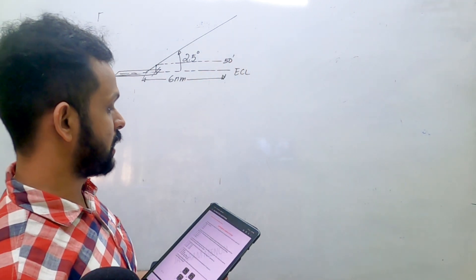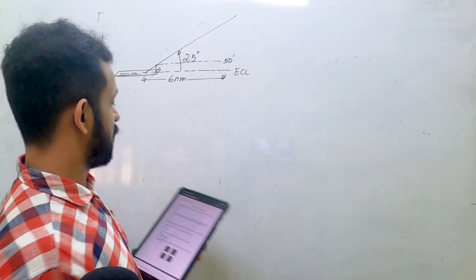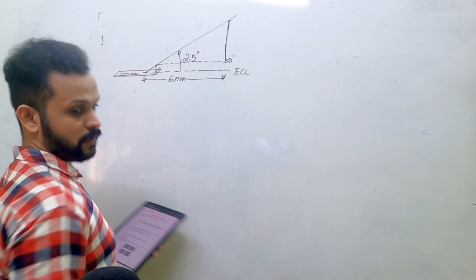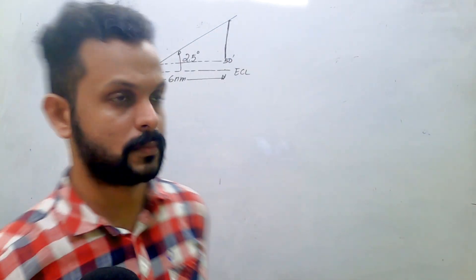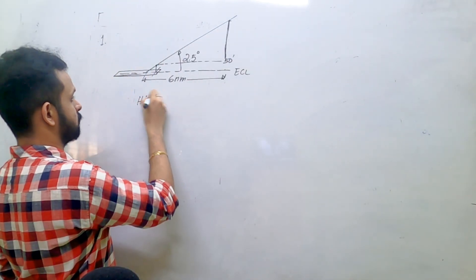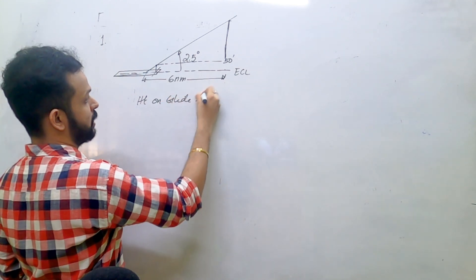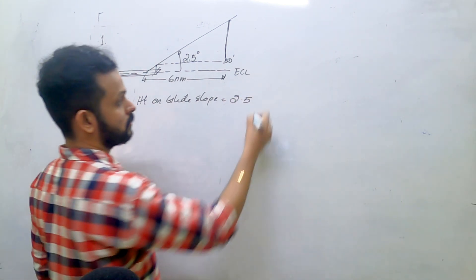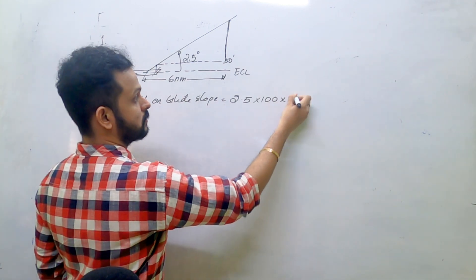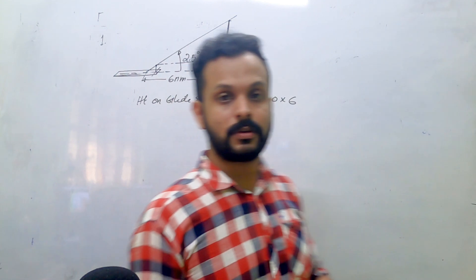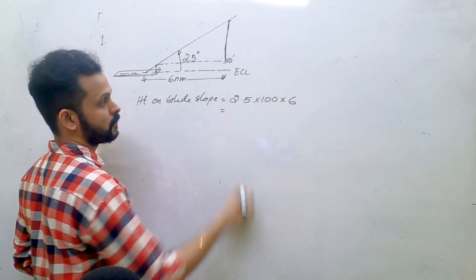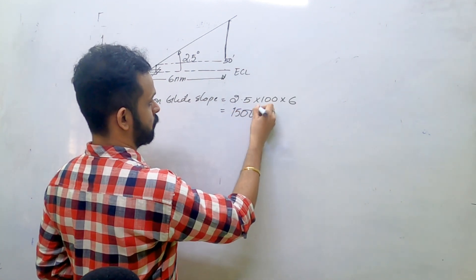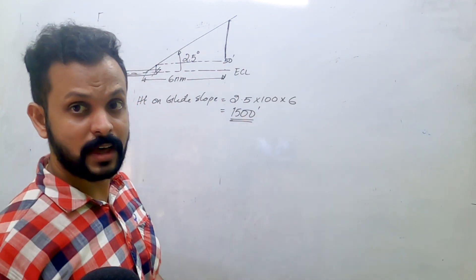We need to find the height of the aircraft six nautical miles from the threshold. We can use the normal formula: height on glide slope equals glide slope multiplied by 100 multiplied by the range. So that's 2.5 into 100 into 6, which gives 1500 feet.